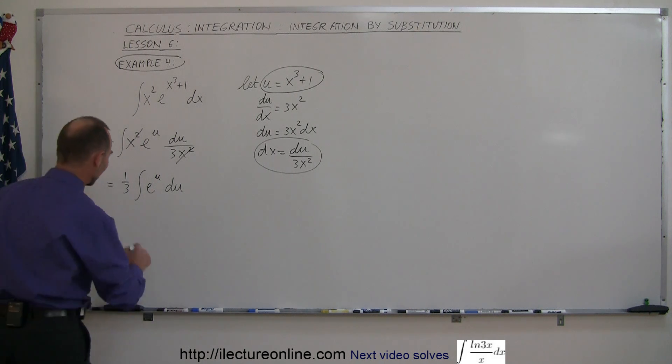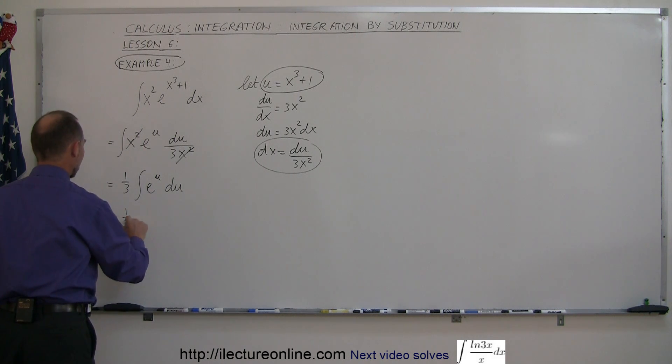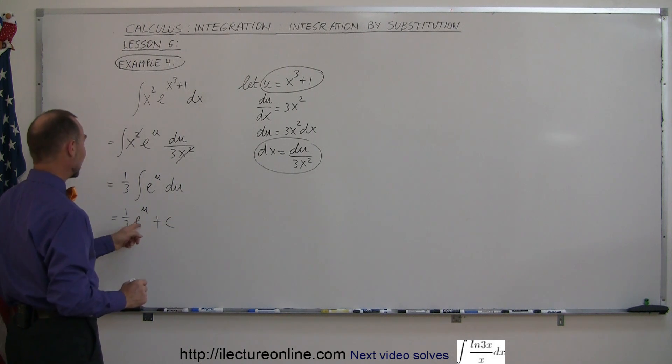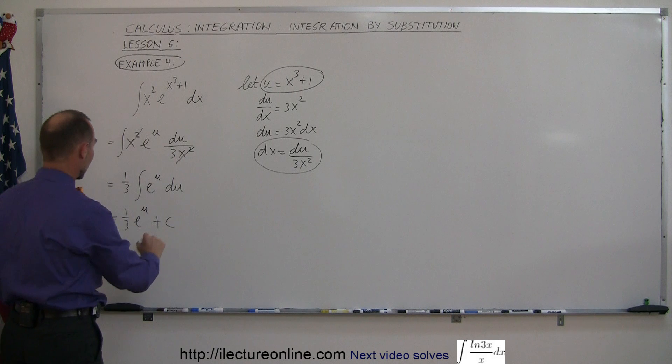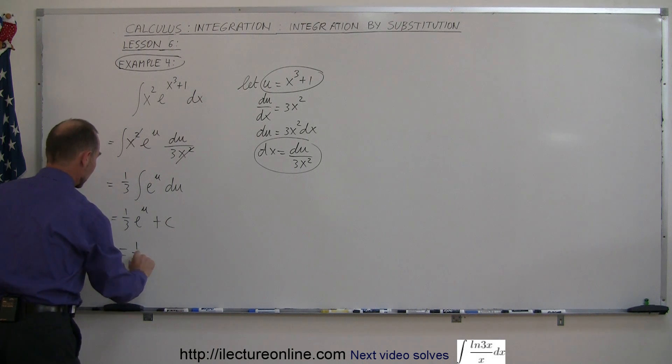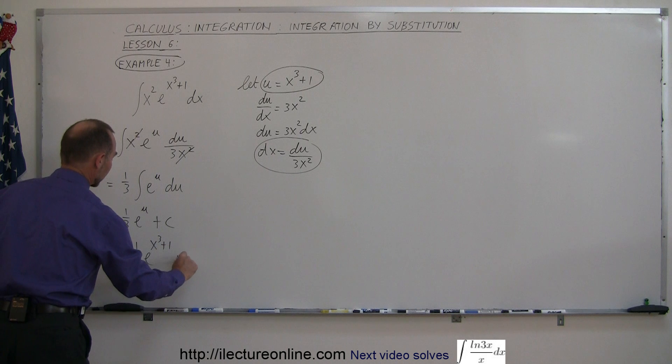Don't forget the constant of integration, so this is equal to 1 third e to the u plus c. And then you substitute back in what u is equal to in terms of x, so this is equal to 1 third e to the x cubed plus 1 plus a constant of integration.